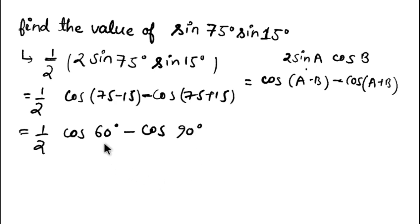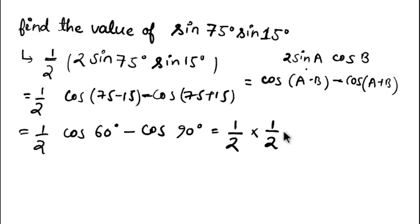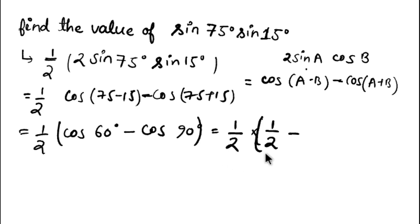Now it is in standard form. We know the value of cos 60° and cos 90°. Substituting: cos 60° is one-half and cos 90° is 0. So we get one-half times (one-half minus 0).